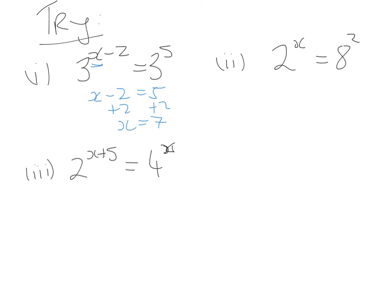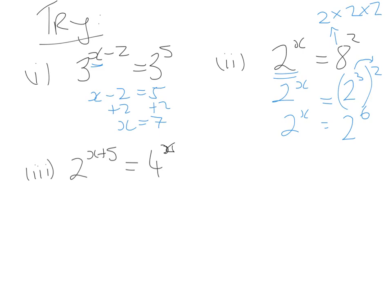Question 2: we can't do anything until the base numbers are the same, and 2 is as far as we can simplify. We can change 8 into base 2 — 8 is the same as 2 cubed — so we write 2 cubed bracket squared equals 2 to the power of x. Applying rule 4: 3 times 2 gives 6, so 2 to the power of 6 equals 2 to the power of x. Equating the indices, x equals 6. So 2 to the power of 6 equals 8 squared, which both equal 64.